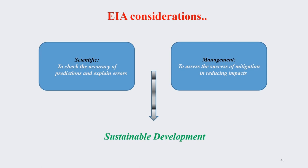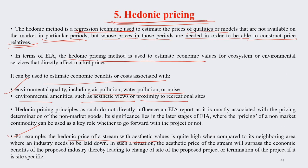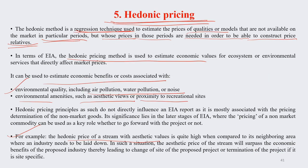In this lecture, we will continue our discussion on Environment Impact Assessment, Part 5. In this lecture we will talk about the various considerations for EIA. If you recall, in the previous lecture we were talking about different methodologies — hedonic prices, cost-benefit analysis, and various other methods of Environment Impact Assessment analysis.